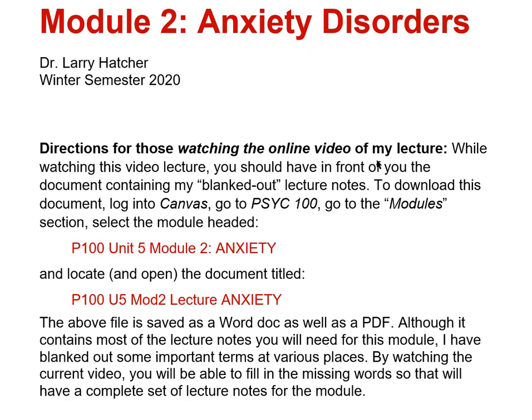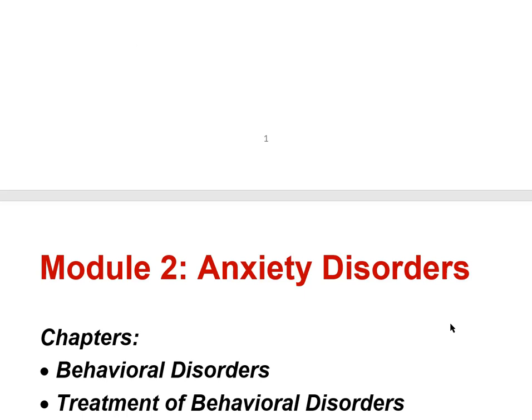For those watching the online video of this lecture, you should have in front of you the document that contains my blanked-out lecture notes. To download this document, log into Canvas, go to Psych 100, go to Modules, and select the module headed P100 Unit 5 Module 2 Anxiety. Locate and open the document entitled P100U5 Mod 2 Lecture Anxiety. This is saved as a Word doc as well as a PDF. I've blanked out some important terms at various places. By watching this video, you'll be able to fill in the missing words so you'll have a complete set of lecture notes for this module.